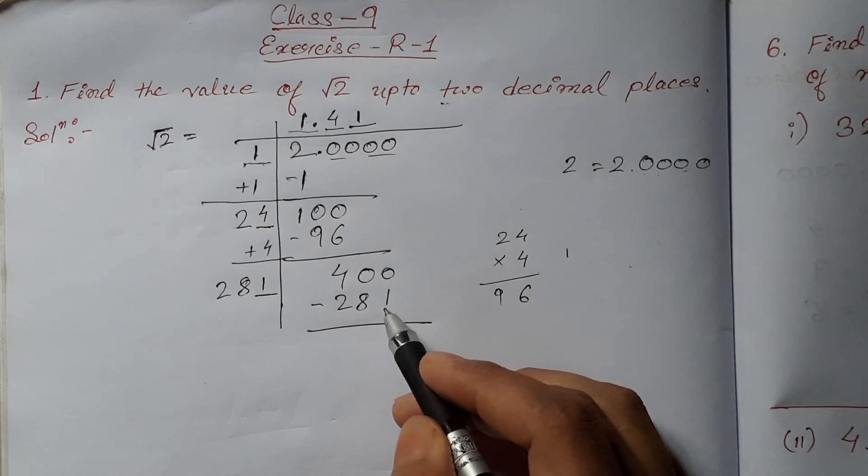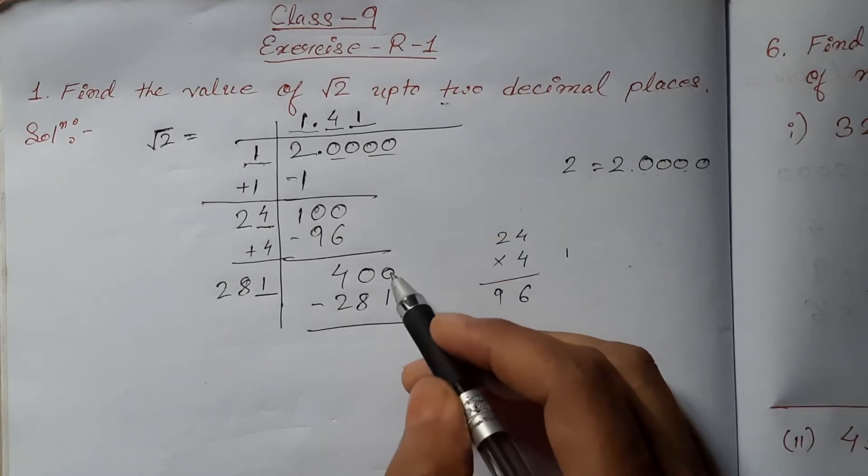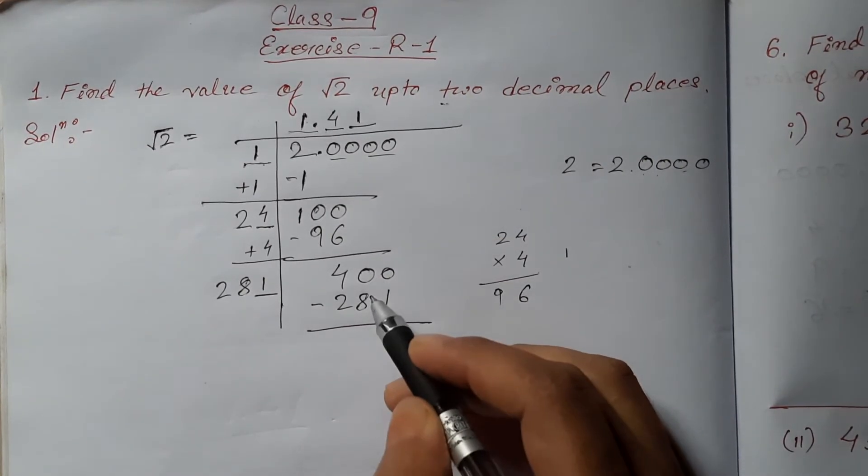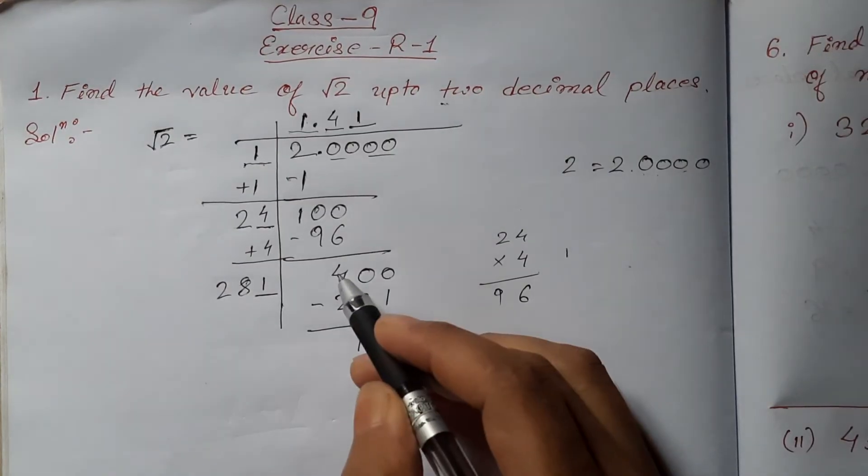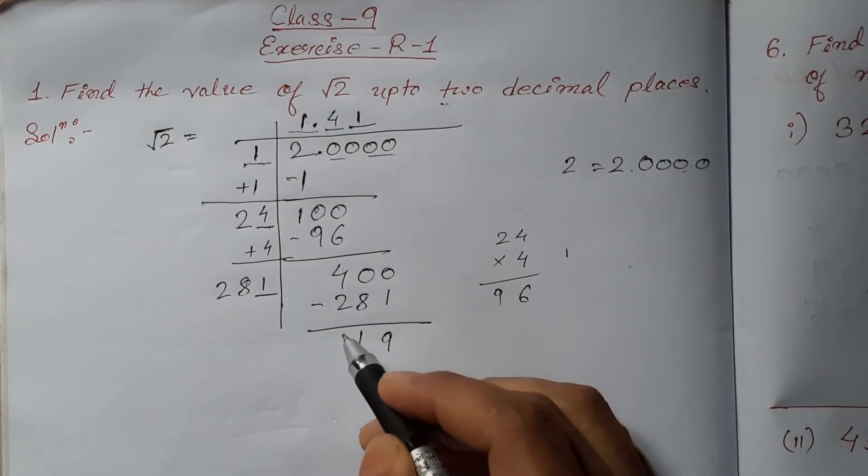Subtract 281 from 400. 10 minus 1 is 9. 9 minus 8 is 1. And here we will have 3. 3 minus 2 is 1.